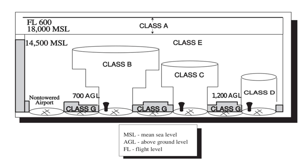Temporary flight restrictions are designated by NOTAM and are used to clear the airspace in special circumstances that could be hazardous to non-participating aircraft. Situations in which TFRs are typically used include forest fires and other natural disasters, air shows, some instances of criminal activity, extensions of restricted airspace for military training operations, and during movement of the President and certain other high-level government officials.